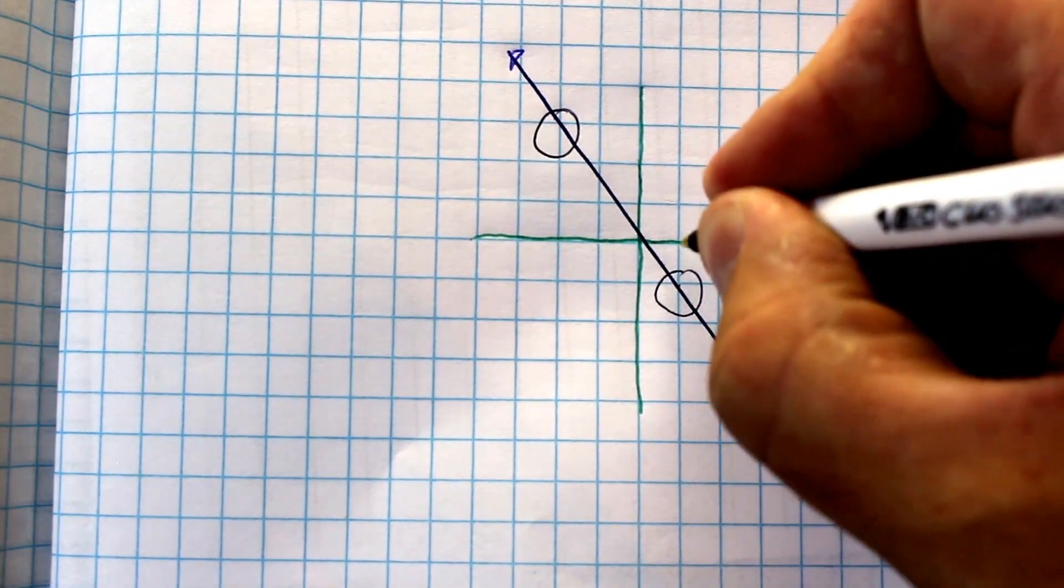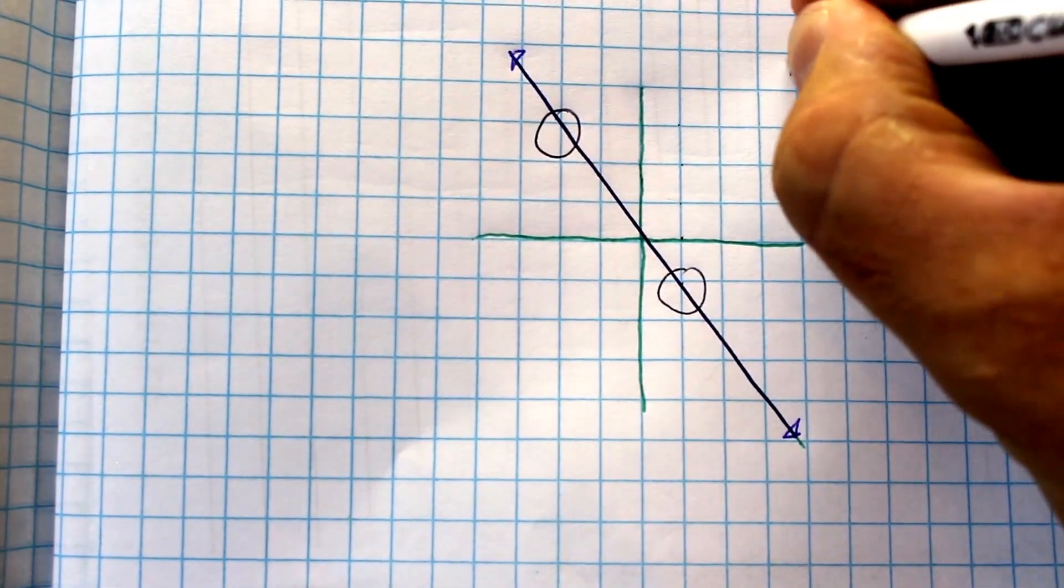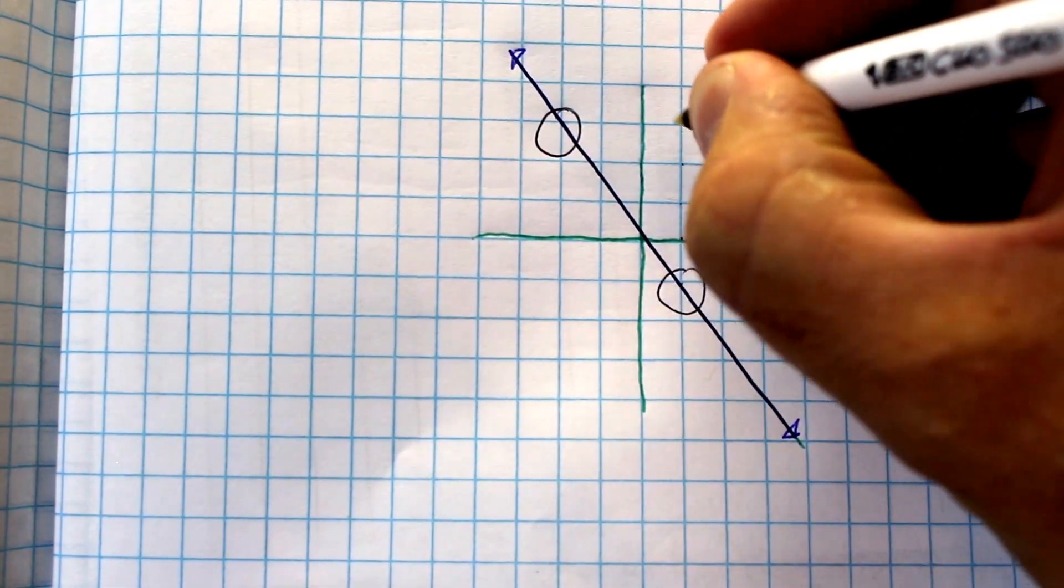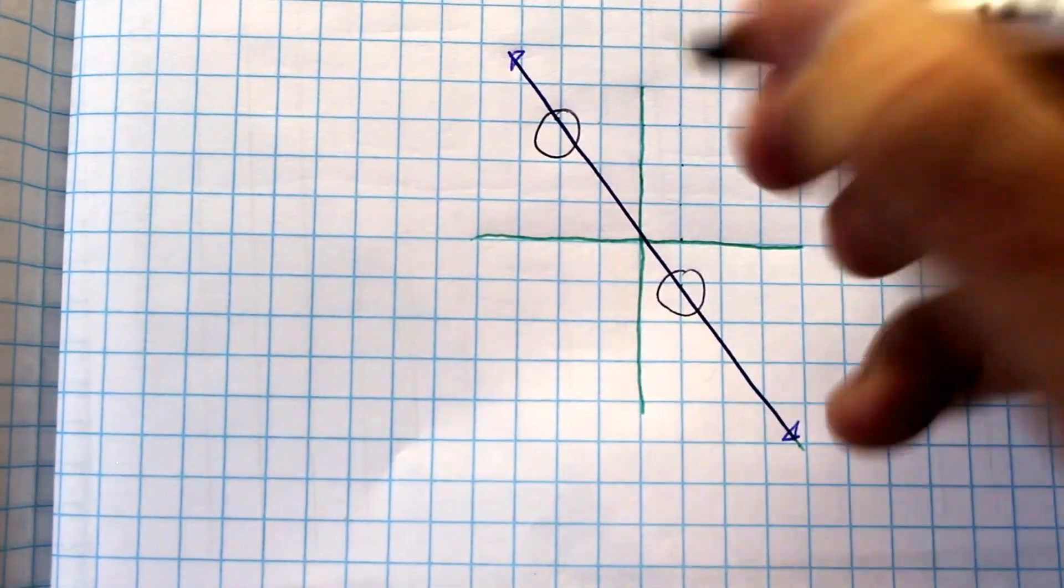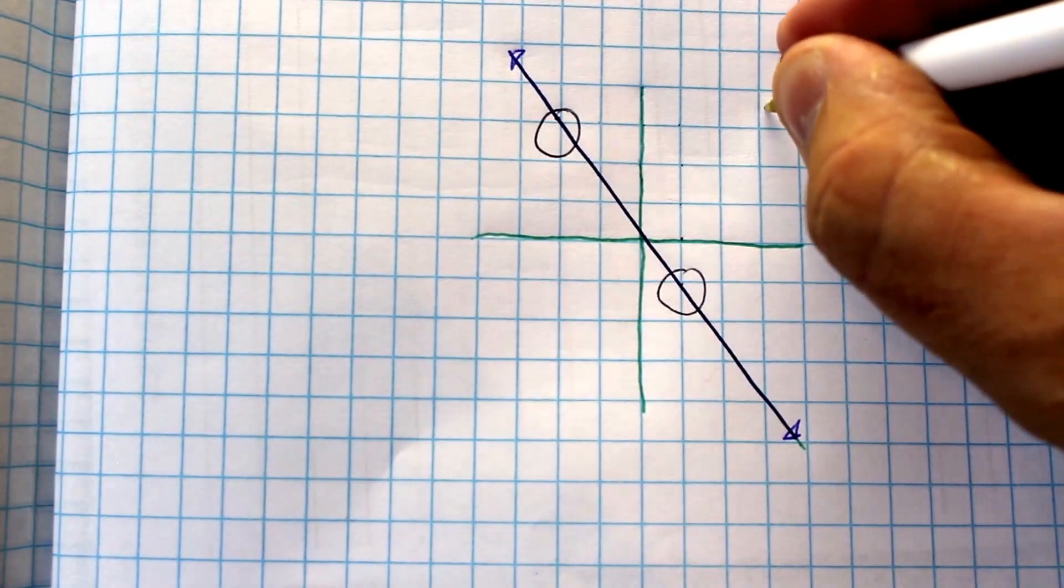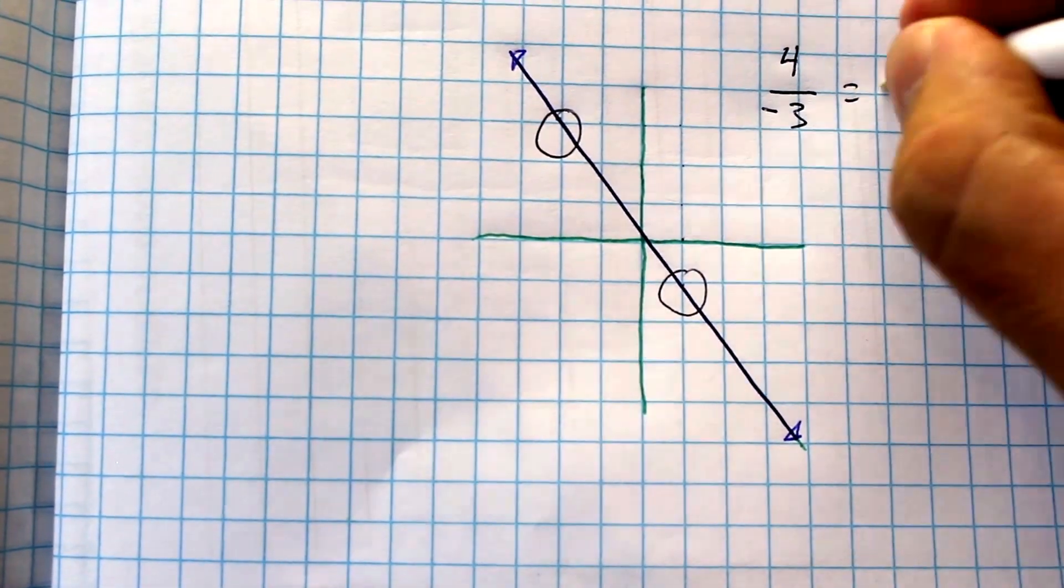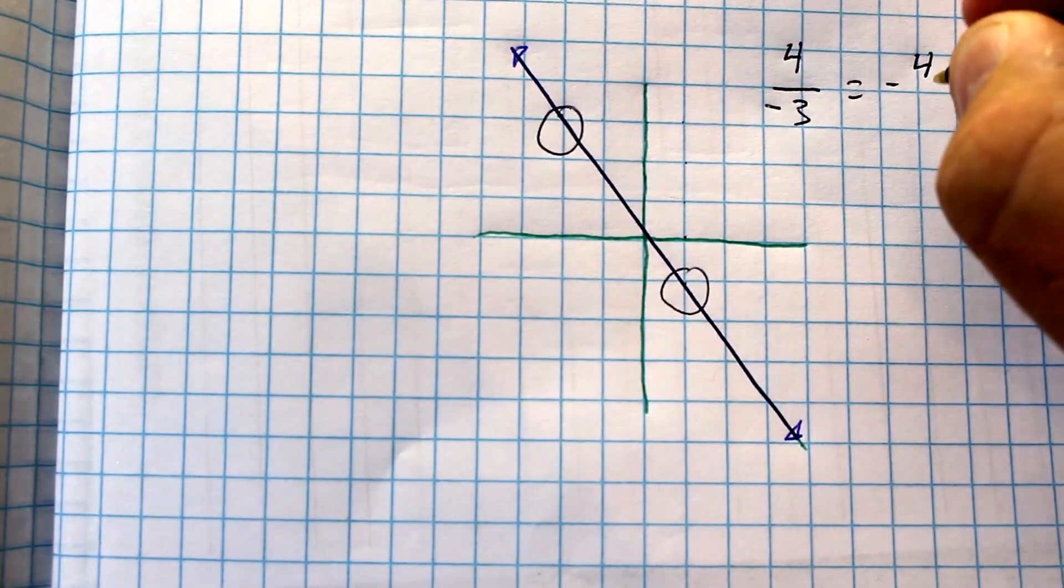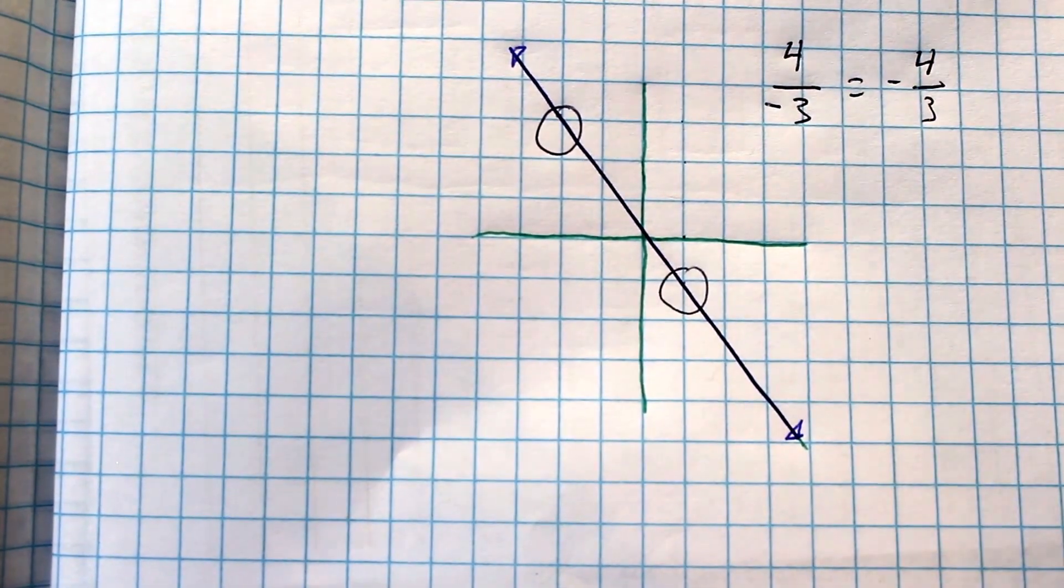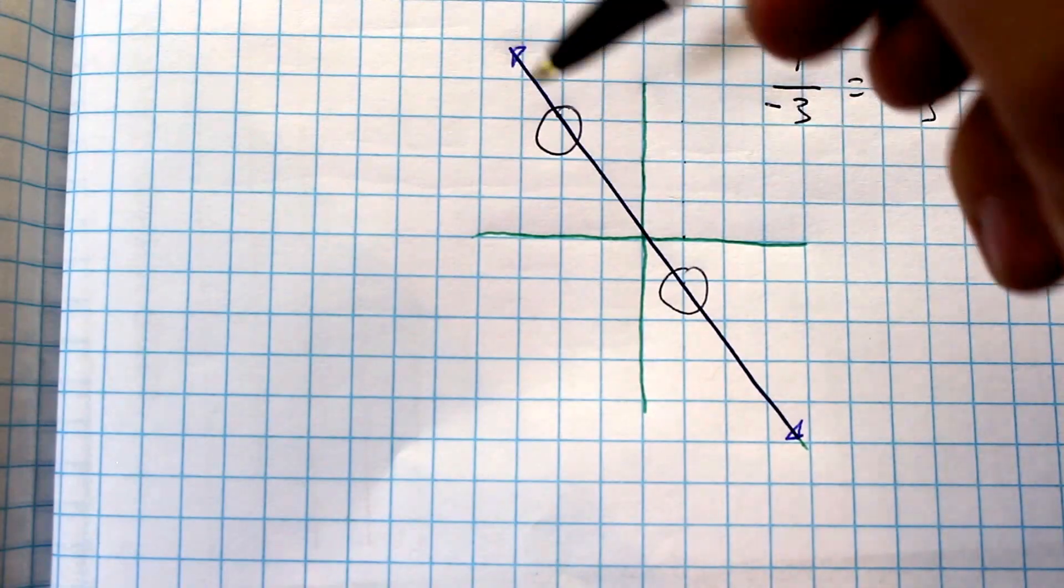So rise, we go one, two, three, four. Four. And then our run is one, two, three, but we're going back, right? This is negative on the x-axis, so it's going to be negative three. So our slope becomes negative four-thirds. You can see that because it's going down, it's a negative slope.